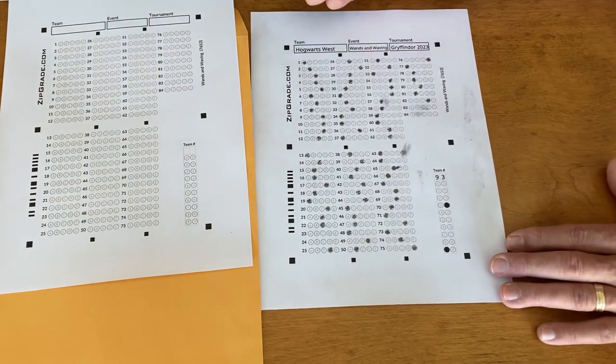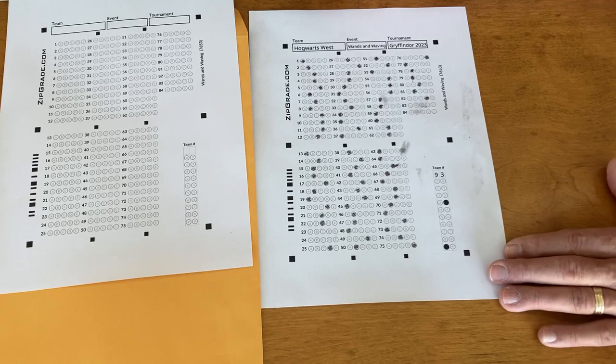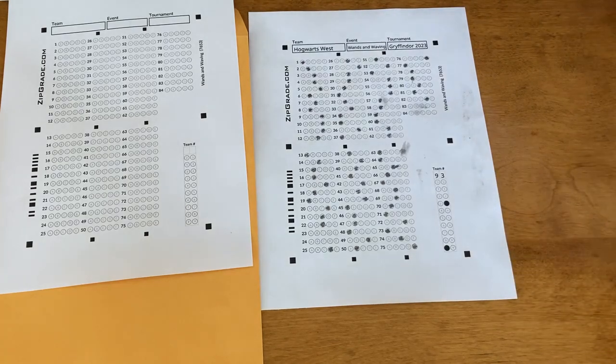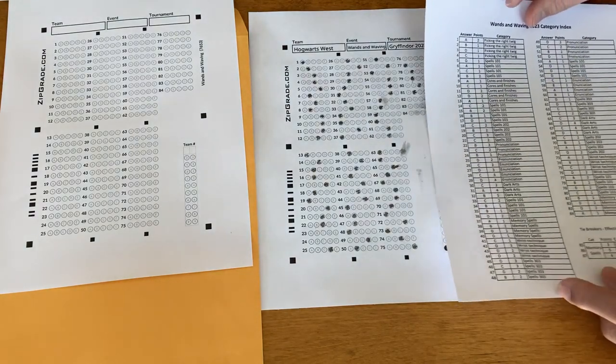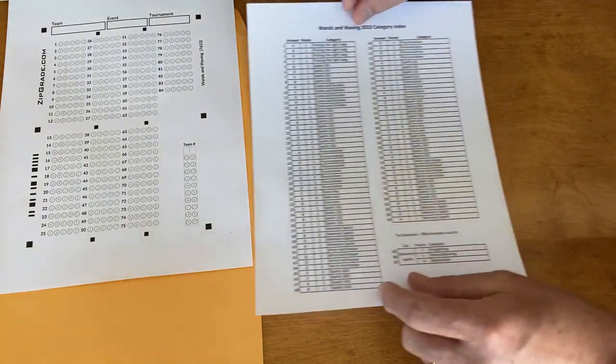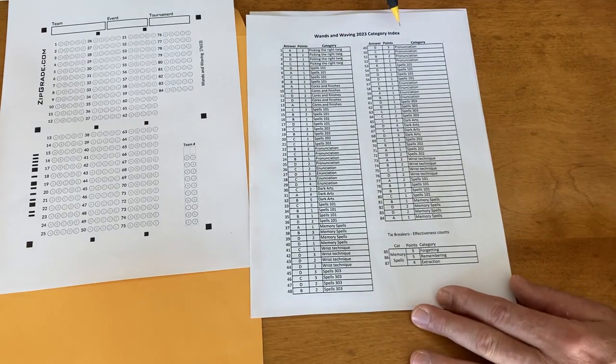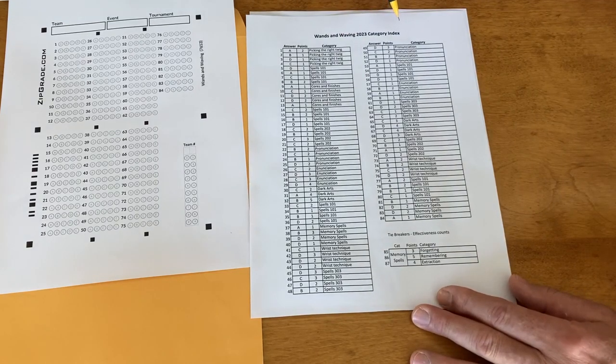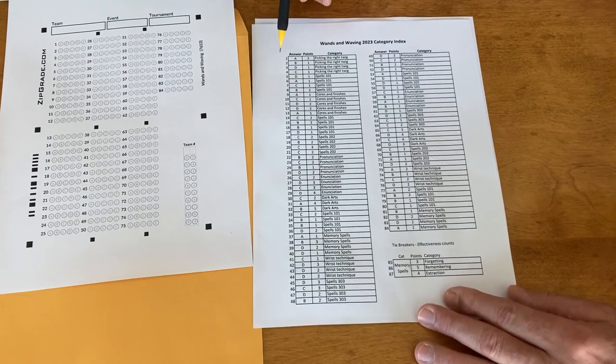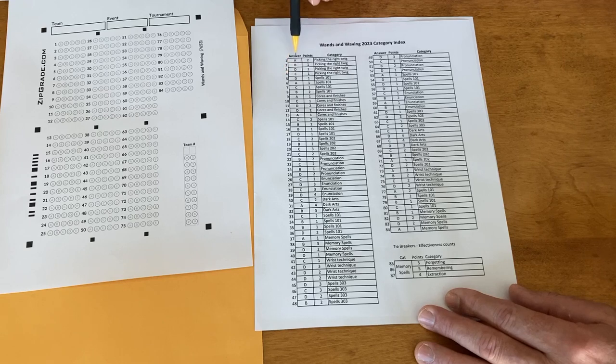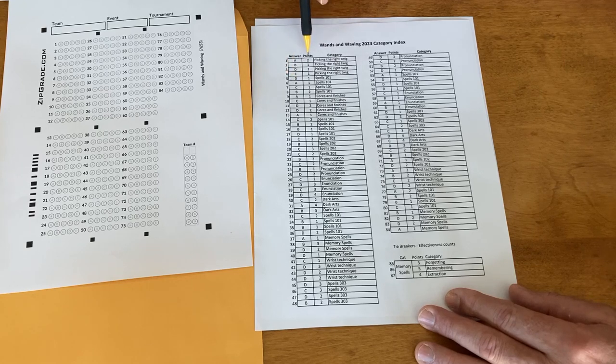At the end of the practice tournament you're gonna get this back. Now what value is this to your event team? The primary point of this video is that at the end of the practice tournaments, we're going to publish what we call a category index for every event that uses a zip grade form.